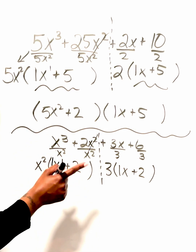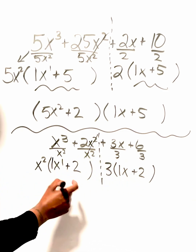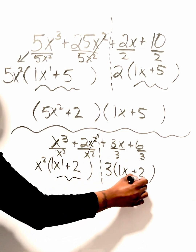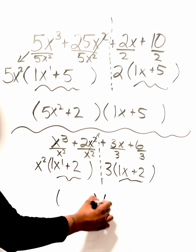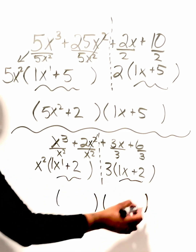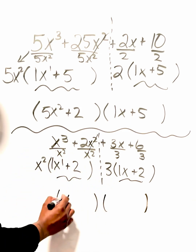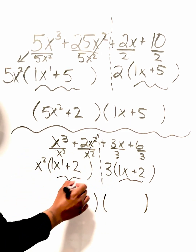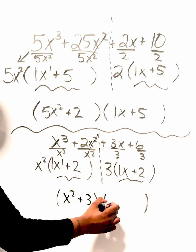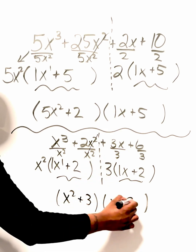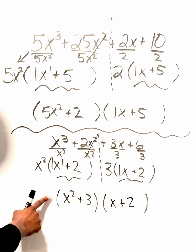Both sets inside the parentheses match, so let's fill in our final answer. We always put what we factored out: x squared, plus 3 since we factored out a positive 3. Then our matching expression: x plus 2, or 1x plus 2 — it doesn't matter how you write it. This is our final answer.